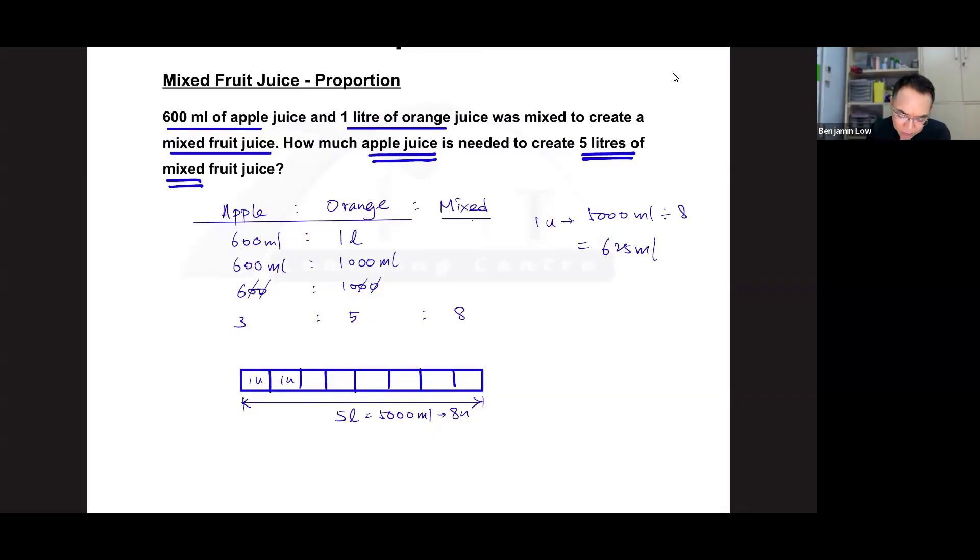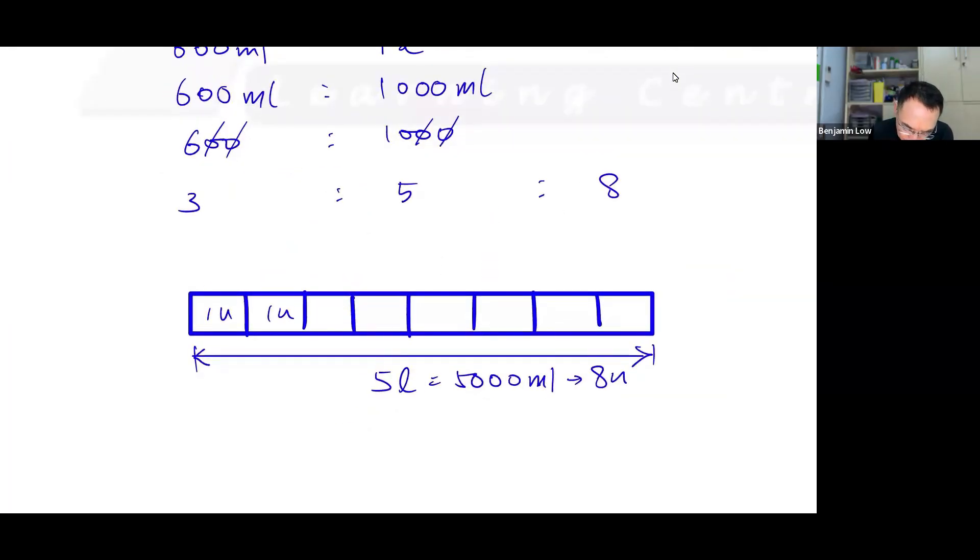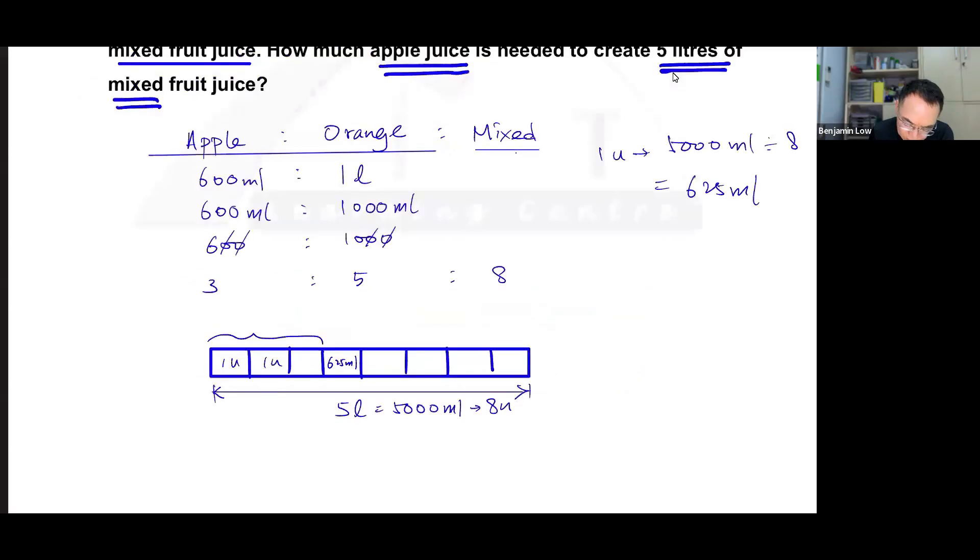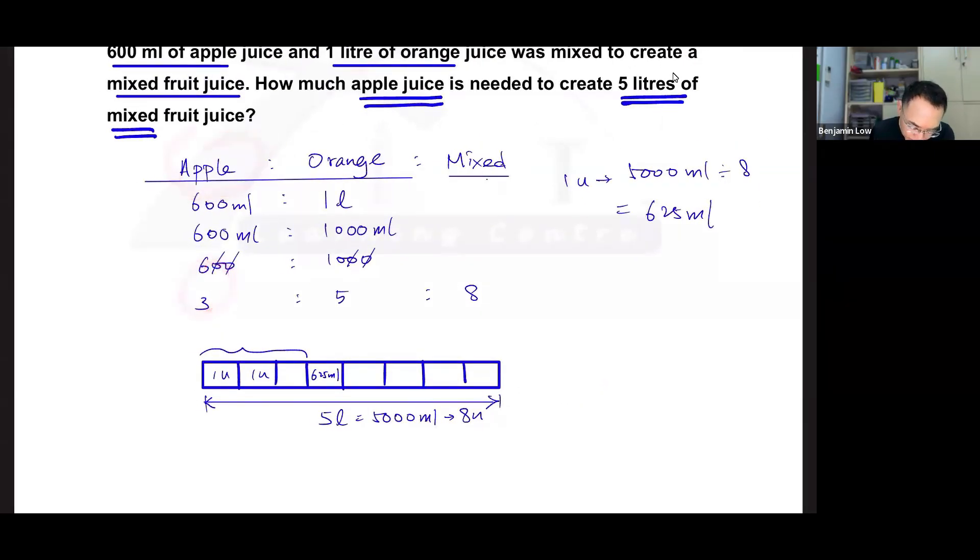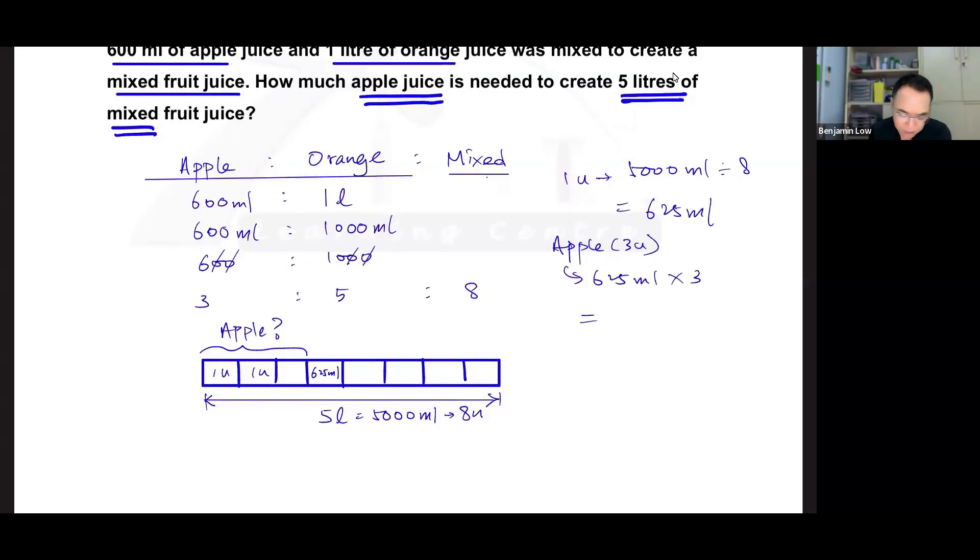The question is asking you to find apple juice. Apple juice is 3 units, so effectively that means that each of these boxes represent 625 ml and you want to find apple juice. Since apple is 3 units, they are actually asking you to find this 3 units here. How do you find 3 units? Simple, right? If 1 unit is 625, then 3 units will be 3 times 625. So apple, which is 3 units, will be 625 times 3. I believe this is 1875. Let me double check. Yes, I get 1875.